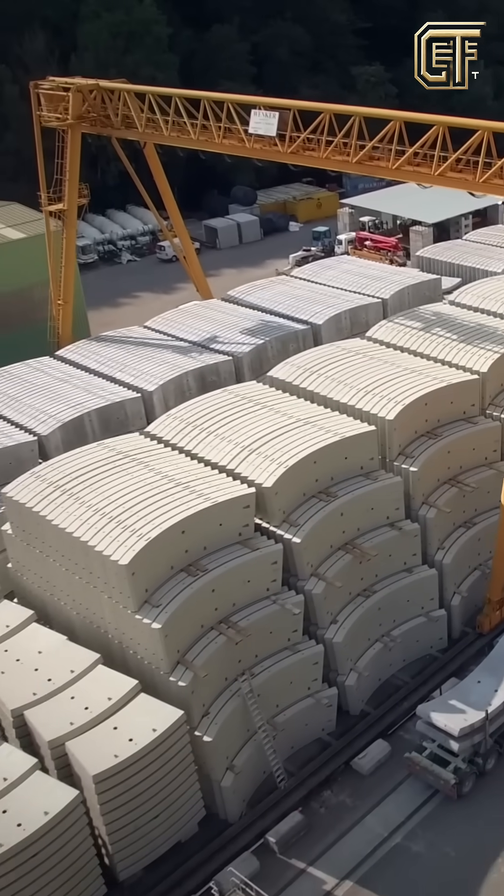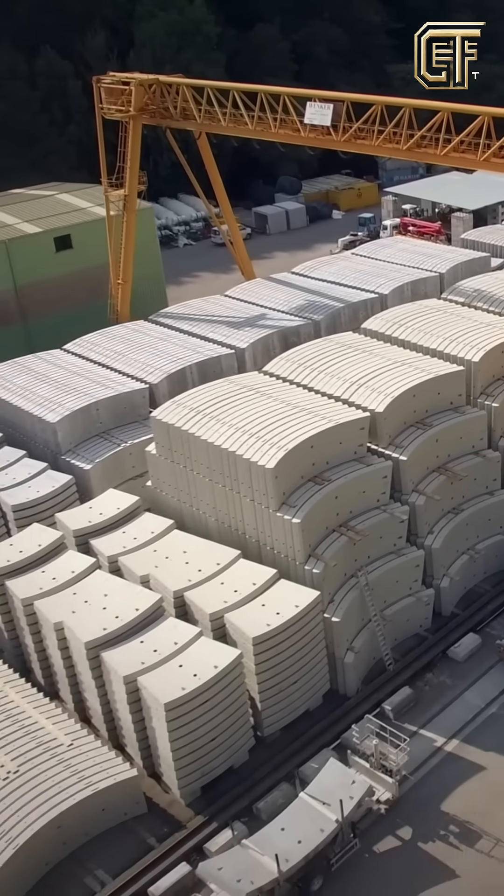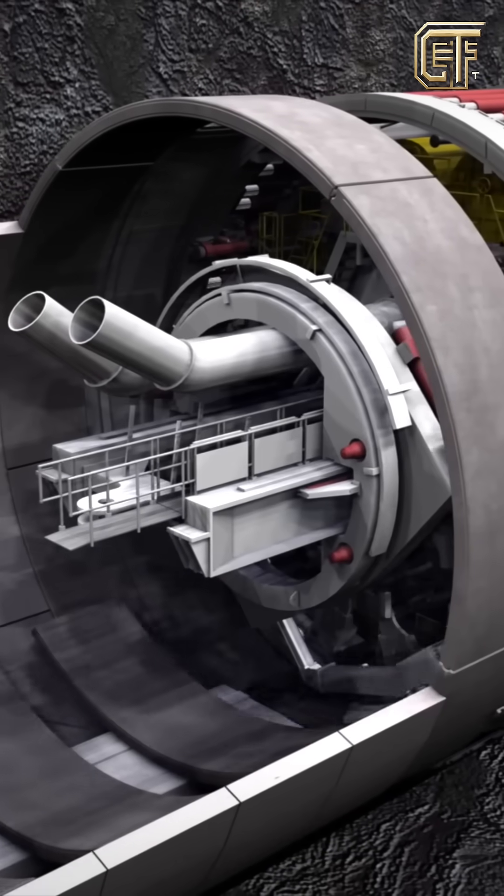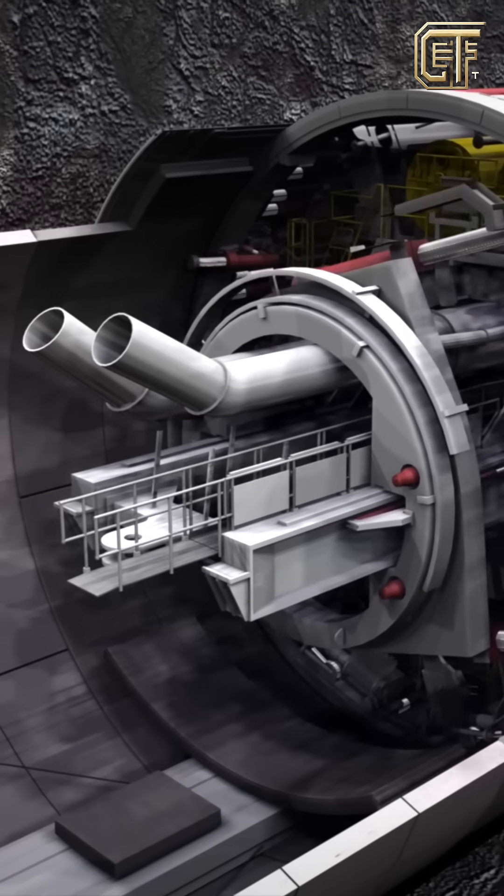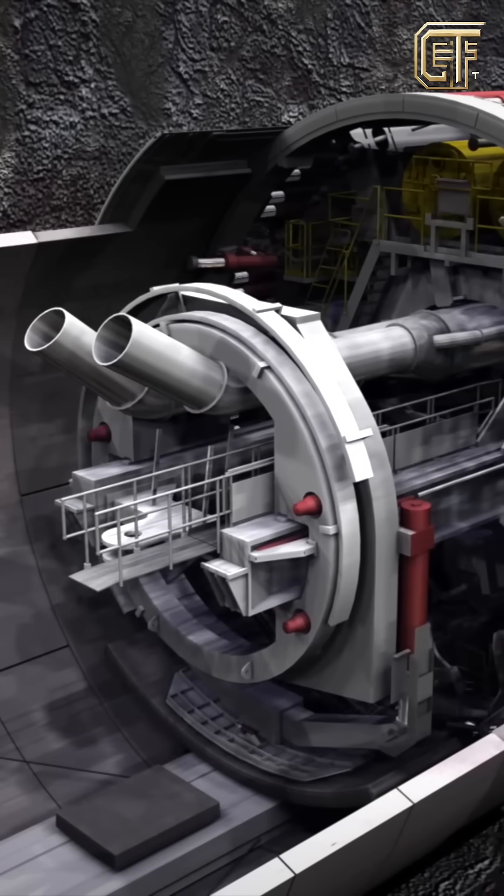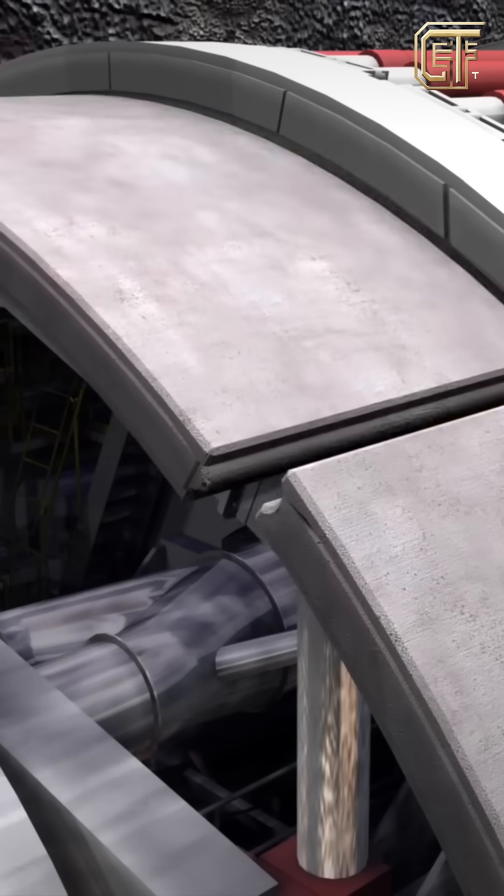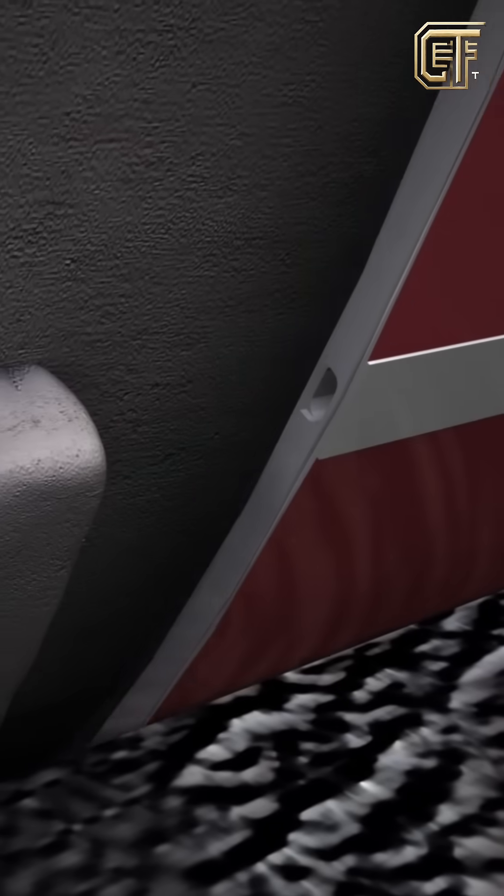Third, reinforcing the tunnel. To prevent tunnel collapse, the lining installation system automatically places concrete or metal segments onto the tunnel walls as the excavation progresses to stabilize the structure and prevent subsidence. A layer of concrete is also injected into the outer surface to fill the gaps between the soil and rock and the lining segments.